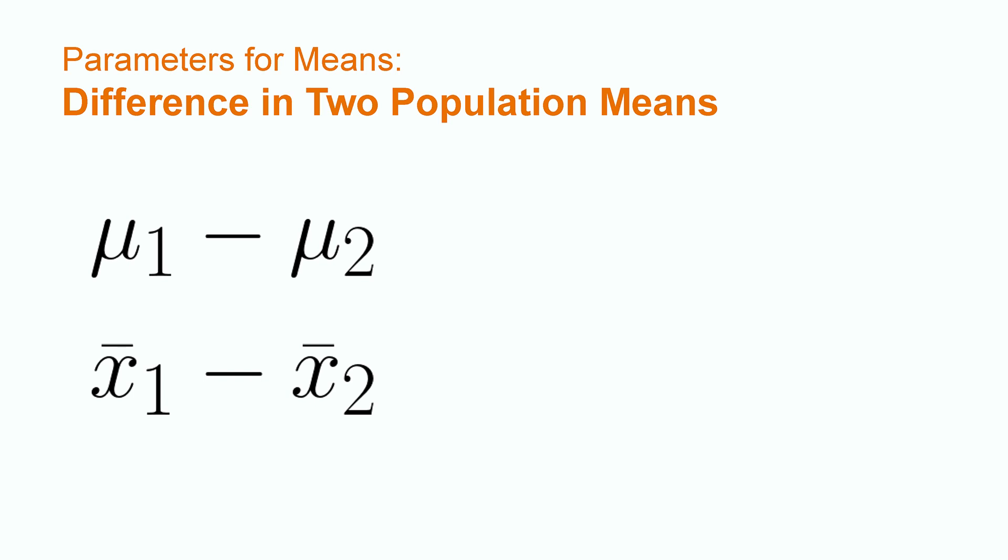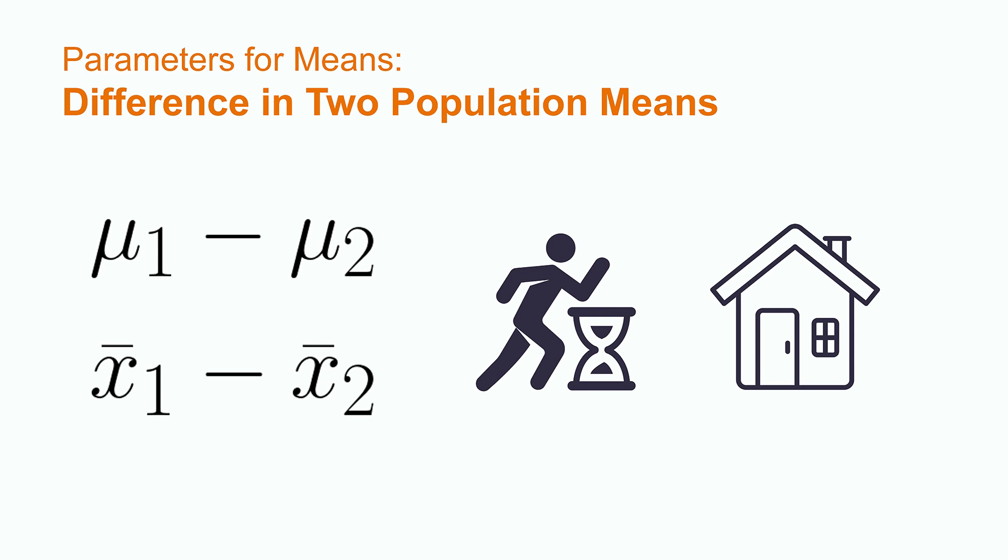Some research questions about the difference in two population means would be, what is the difference between the mean mile time for males versus females? And, what is the difference between the mean cost of a house in 1960 versus 2022?